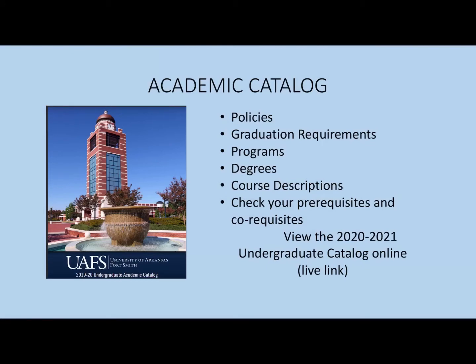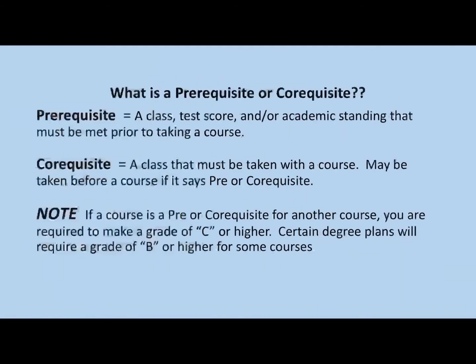First, the Academic Catalog. You can access the Academic Catalog in your myUAFS account. This catalog contains graduation requirements, degree plans, and course descriptions. These course descriptions will help you understand pre- and co-requisites. A prerequisite is a course that must be taken before another course — for example, completing Composition 1 before you complete Composition 2.